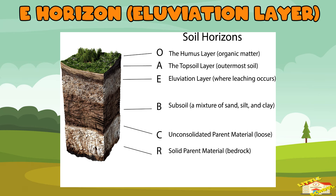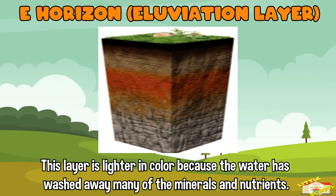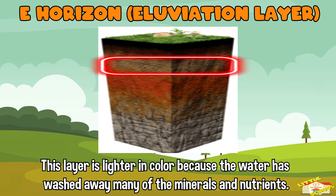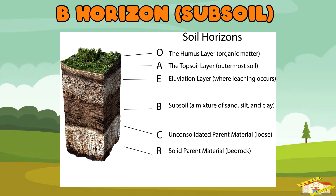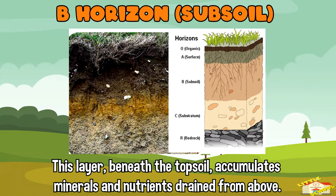E-Horizon, illuviation layer — this layer is lighter in color because the water washed away many of the minerals and nutrients. B-Horizon, subsoil — this layer beneath the topsoil accumulates minerals and nutrients drained from above.